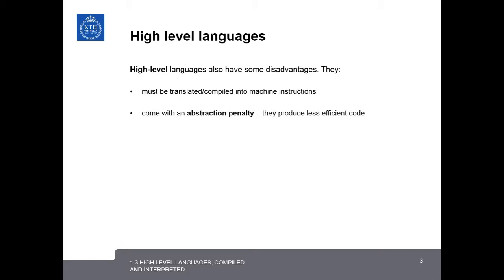First of all, they must be translated or compiled into machine instructions to be run on the computer. They come also with an abstraction penalty, which means they produce less efficient code. Generally, the higher the abstraction level, the less efficient the code.